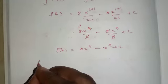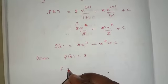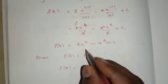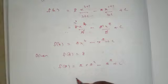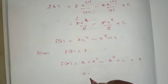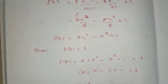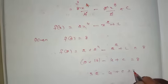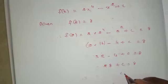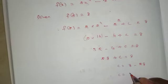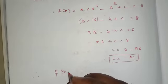Given condition f of 2 equals 8. So f of 2 equals 2 times 2 power 4 minus 2 power 2 plus c equals 8. That's 2 times 16 minus 4 plus c equals 8. So 32 minus 4 plus c equals 8, which gives 28 plus c equals 8, therefore c equals 8 minus 28, c equals minus 20.